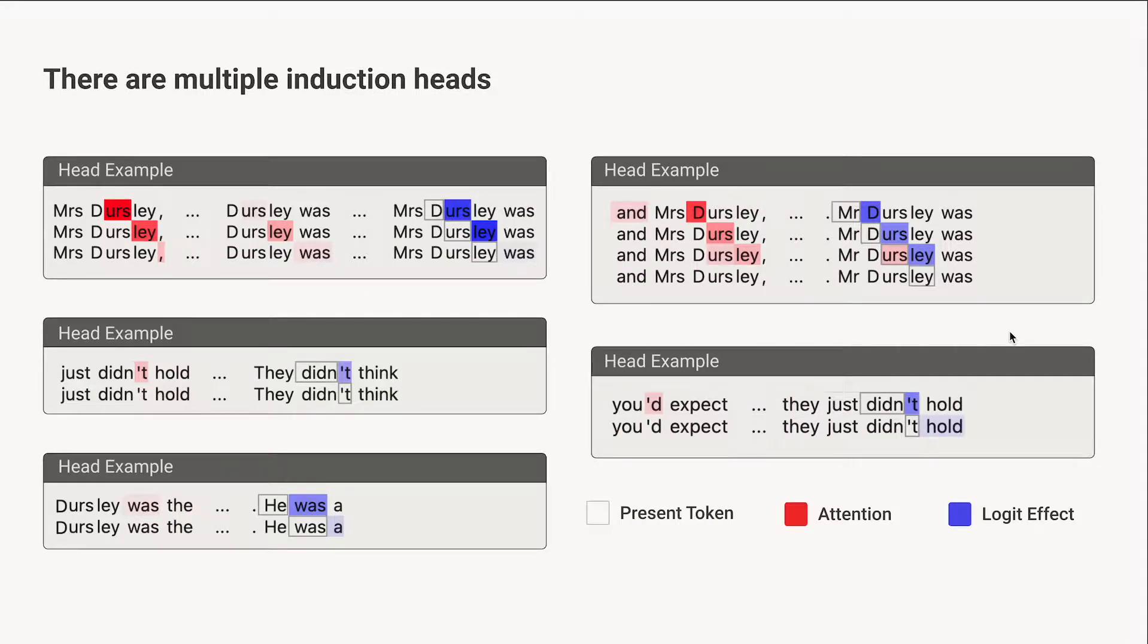It's not just one of them, one head like this. We actually see a lot of heads that are doing slightly different flavors of this. Some are very strict versions that are really looking for exact matches and exact matches and copying, whereas others are a little bit more flexible. Like here we have Dursley, probably Mr. Dursley was, he, and then we copy was, or you'd and then didn't. Probably if you're using apostrophes on contractions, you're likely to do that again in the future.